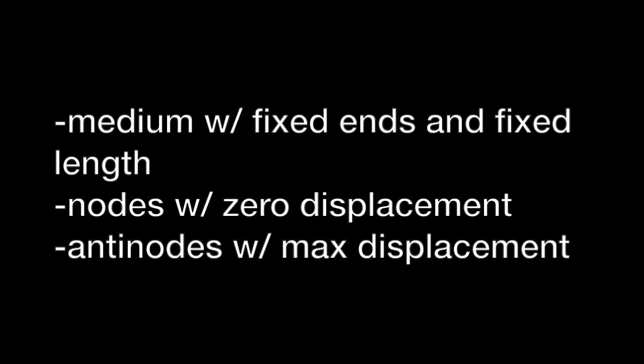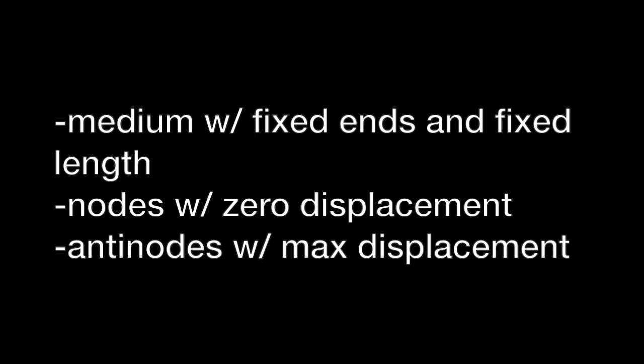Certain points along the medium called nodes will remain at rest at all times. Points called anti-nodes will oscillate with a maximum amplitude. Any other points will have amplitudes somewhere in between. The phenomenon is possible because there are two harmonic waves of equal amplitude, wavelength, and frequency moving in opposite directions along the same medium.